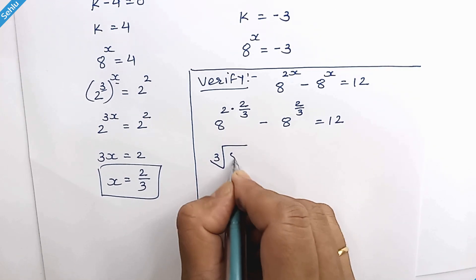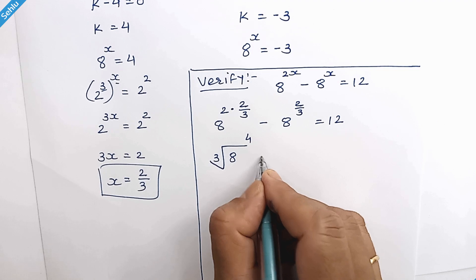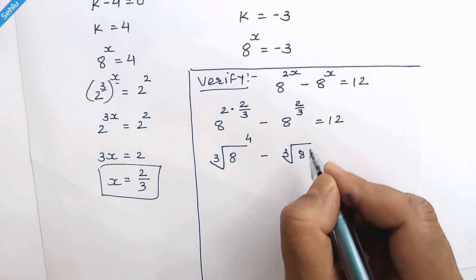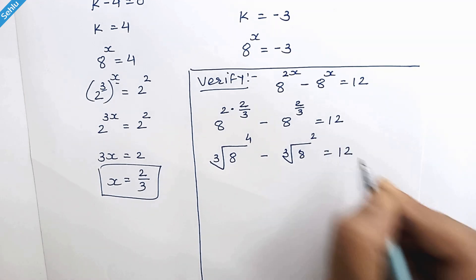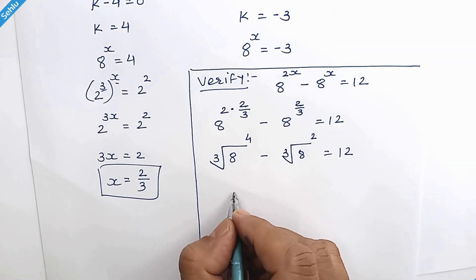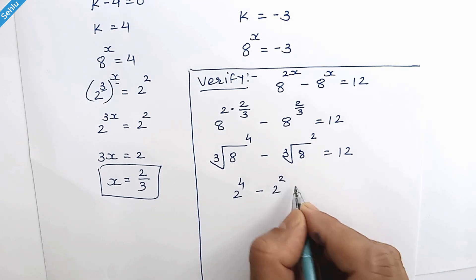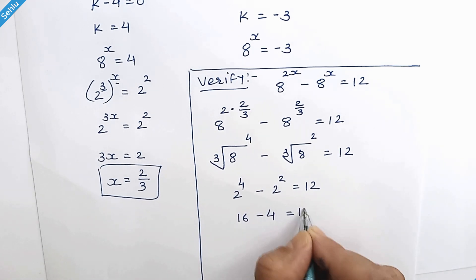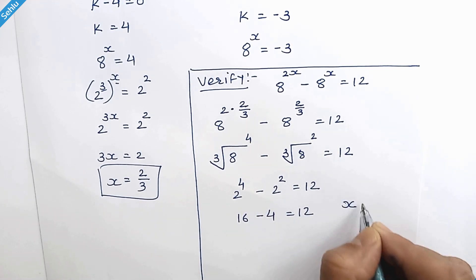We can write this part as cube root of 8 to the power 4 minus cube root of 8 square, so this will be 2 to the power 4 minus 2 square is equal to 12. 2 to the power 4 is 16, so x is equal to 2 over 3 is the correct answer.